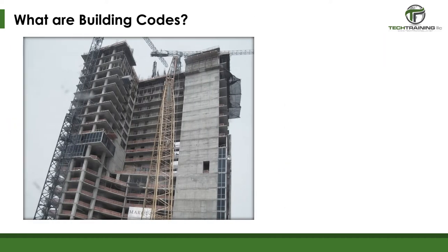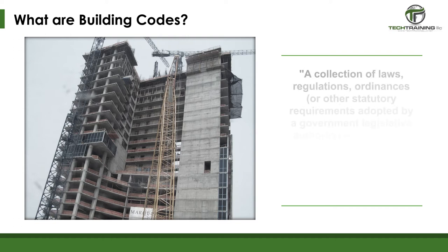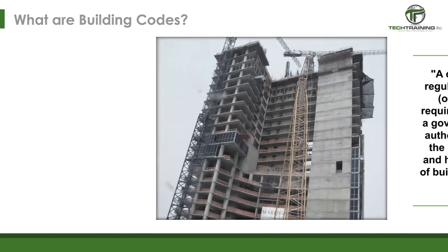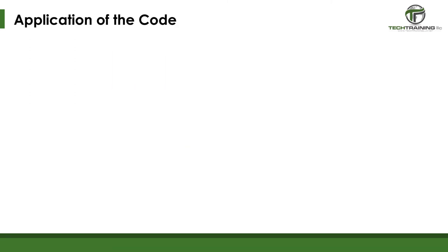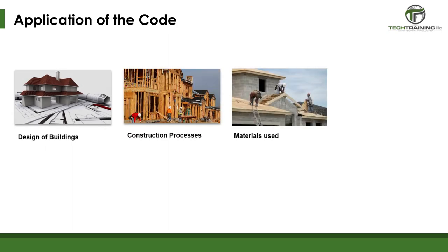Let's start by defining building codes and their overall purpose. The term code means a collection of requirements that pertain to a specific subject and regulate specific practices. So building codes are a collection of requirements that pertain to buildings. The formal definition is: a collection of laws, regulations, ordinances, or other statutory requirements adopted by a government legislative authority, involved with the physical structure and healthful conditions of buildings and building sites. The primary application of these rules is to regulate new or proposed construction.